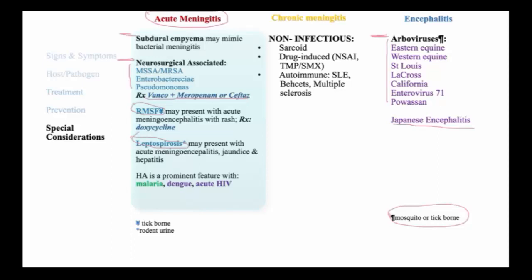Finally, headache is a predominant feature with malaria, dengue, and acute HIV — these are all syndromes where meningitis is mimicked but not involved. In the case of chronic meningitis, one also must consider non-infectious causes, including sarcoidosis, drug-induced causes such as non-steroidals and Bactrim, and autoimmune processes including lupus, Behçet's, or multiple sclerosis.